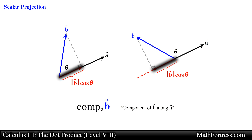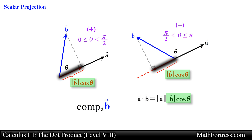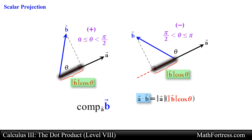Similar to the dot product, this value will be positive if theta is between 0 (inclusive) and pi over 2 (exclusive), and negative if theta is between pi over 2 (exclusive) and pi (inclusive). Notice that this quantity appears in the geometric definition of the dot product. Using this expression, the dot product between vector a and vector b can be interpreted as the length of vector a times the scalar projection of vector b onto vector a.